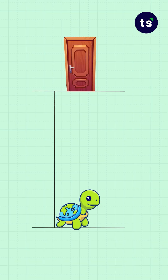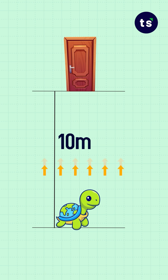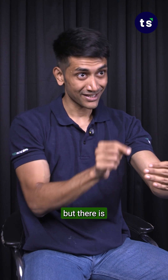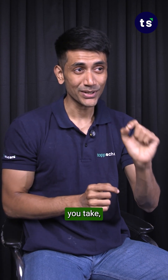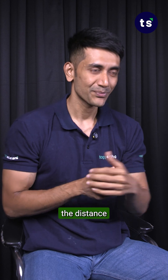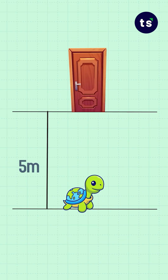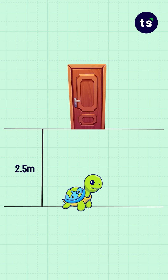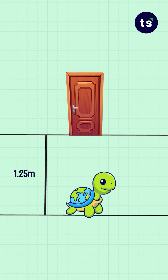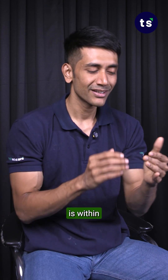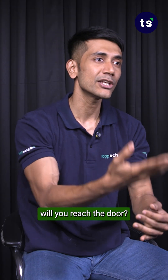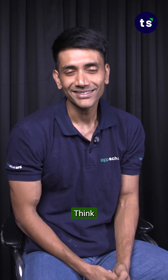Imagine you're standing at a distance of 10 meters from a door and approaching it, but with one condition: every step you take, you cover half the remaining distance. In the first step you cover 5 meters, in the second 2.5 meters, then 1.25 meters, and so on. The question is: within how many steps will you reach the door?